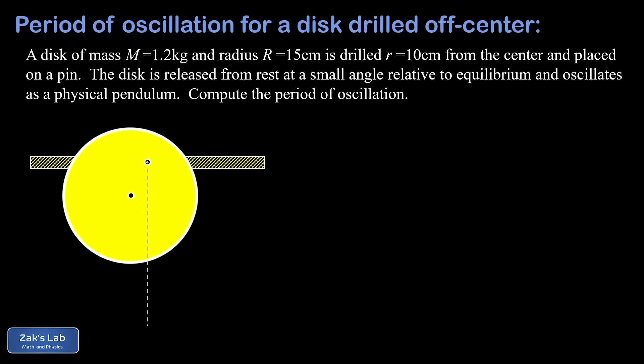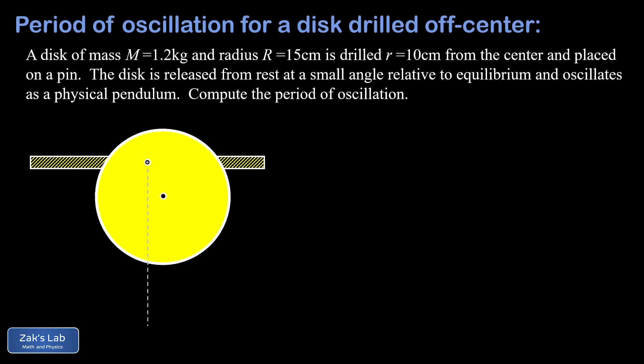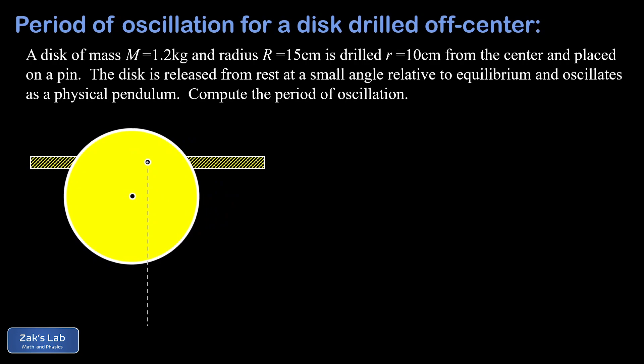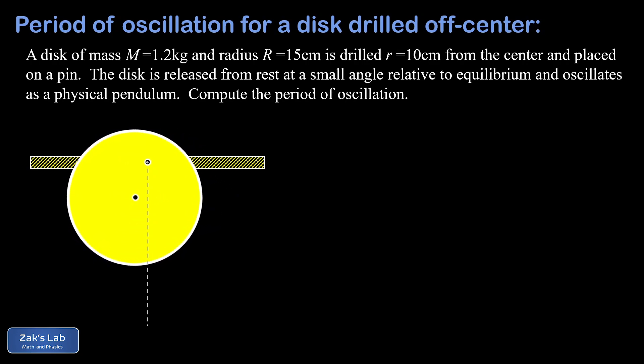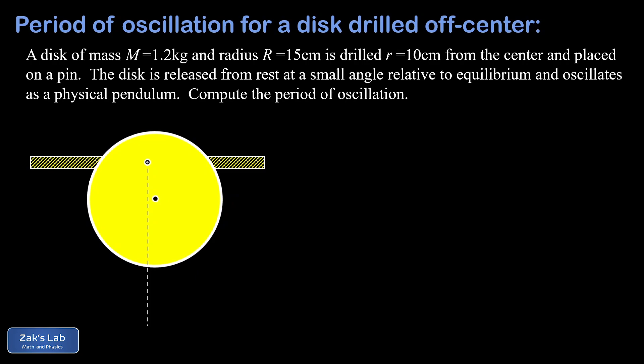In this video, we're going to compute the period for a disc that's been drilled off-center and used as a physical pendulum. We're given the mass of the disc as 1.2 kilograms and its radius is 15 centimeters. We're told that we've drilled a hole in it 10 centimeters from the center of the disc. We then set the disc on a pin and release it from a small angle and allow it to oscillate.